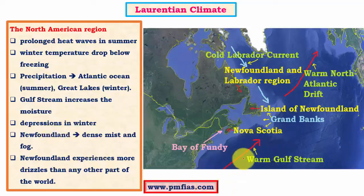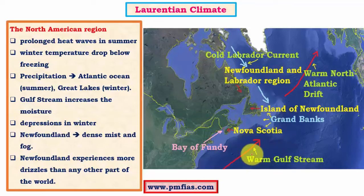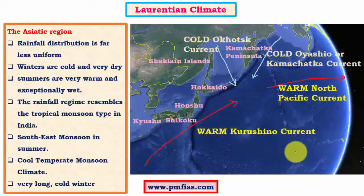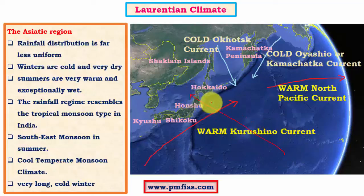The Gulf Stream, as a warm current, increases moisture levels significantly through evaporation. Winds blowing from the Azores High pressure cell carry significant moisture over the warm Gulf Stream towards the Laurentian climatic regions. In the Asiatic region, winds flow from high pressure cells especially in summer months, when Southeast monsoons bring good amounts of rainfall to the Japanese islands as well as parts of Manchuria, Sakhalin Islands, and Eastern Siberia of Russia.